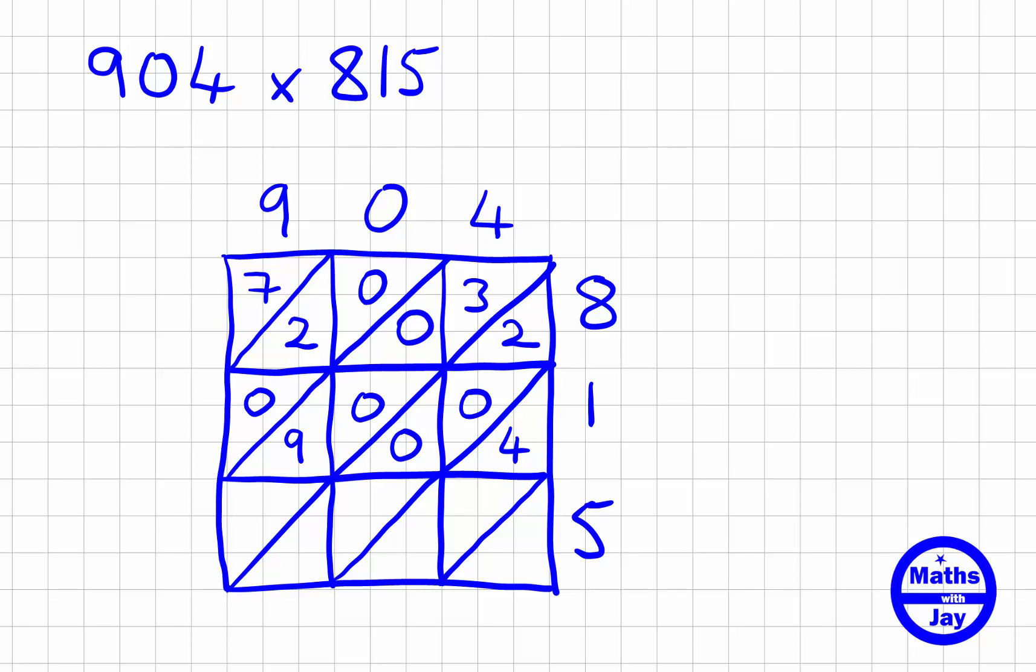To finish off, we're going to multiply five by the nine, the zero, and the four. Five nines are 45, so four and five. Zero times five is zero. Four times five is twenty, so two above the diagonal and zero below. That's the multiplying done.